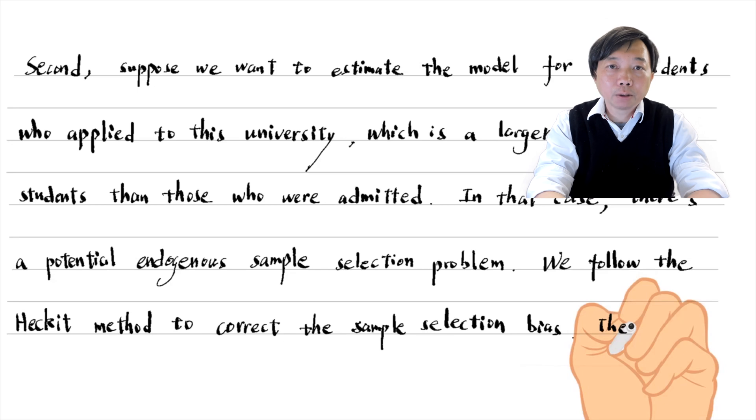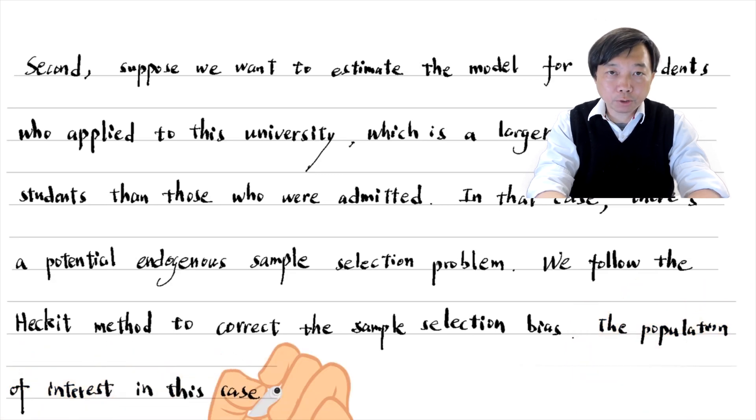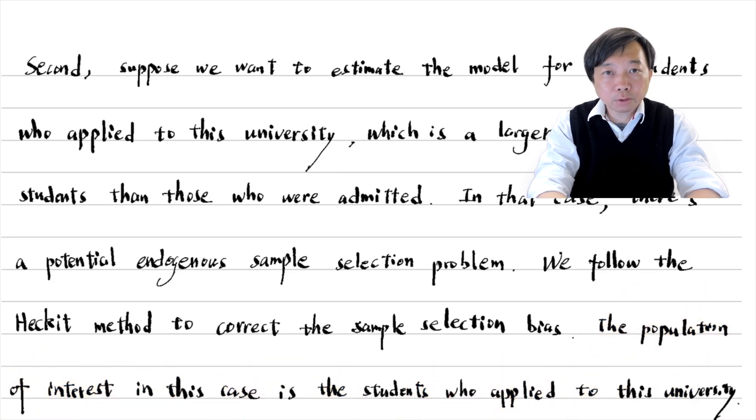In the second step, using the selected sample, that is, the students who were admitted, run the original regression with the inverse Mills ratio as an additional explanatory variable. The OLS estimates will be consistent for the students who apply to this university. The population of interest in the second case is the students who applied to this university.